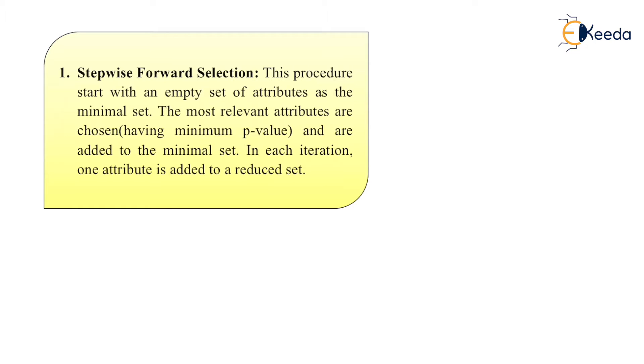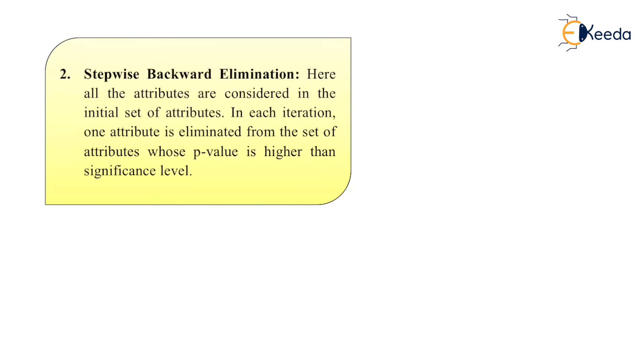Second is stepwise backward elimination. Here, all the attributes are considered in the initial set of attributes. In each iteration, one attribute is eliminated from the set of attributes whose p-value is higher than the significance level.